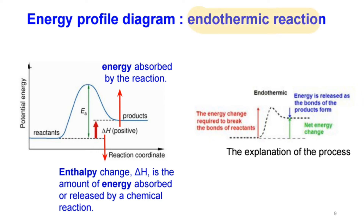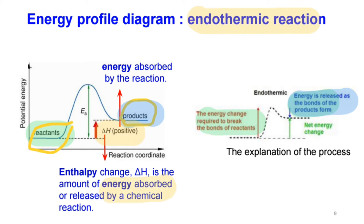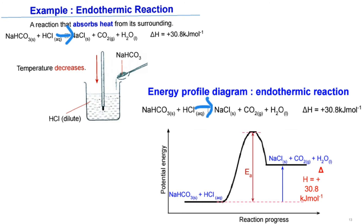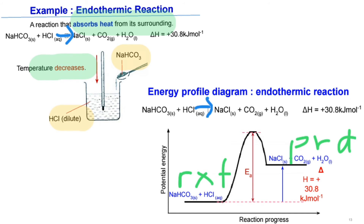The energy profile diagram for an endothermic reaction shows that the potential energy of reactants is lower than the potential energy of products. This is because the energy required to break the bonds of reactants is lower than the energy released in forming new bonds. The enthalpy change is the energy absorbed by the reaction. For example, when sodium bicarbonate is dissolved in hydrochloric acid, the temperature of the solution decreases, meaning heat is absorbed from the surroundings. The difference between the energy of products and reactants is the enthalpy change — the amount of energy required for the reaction to occur.